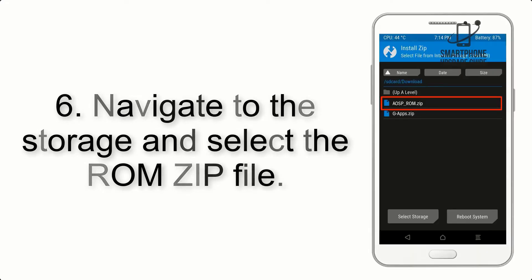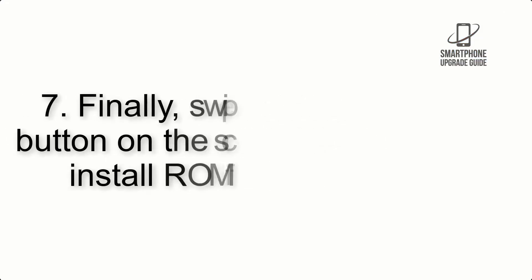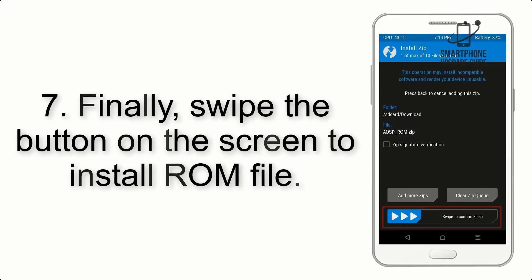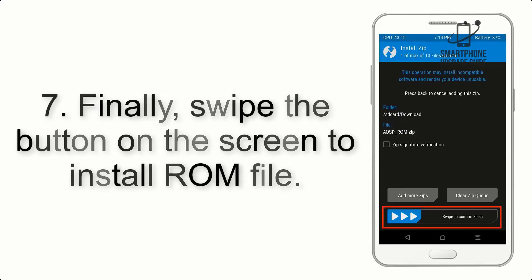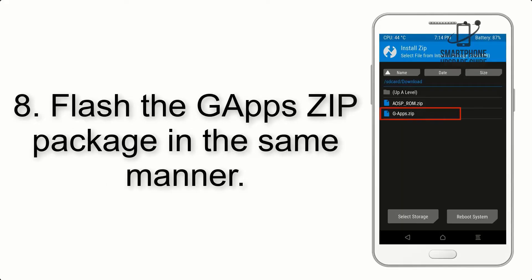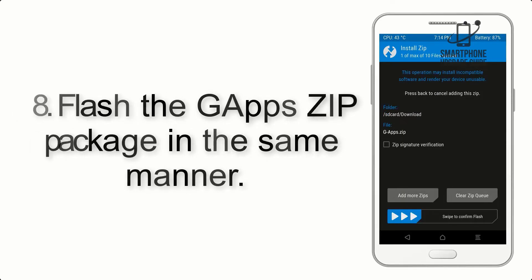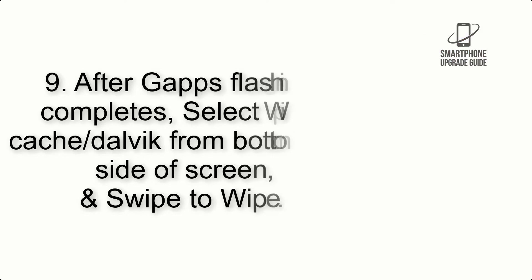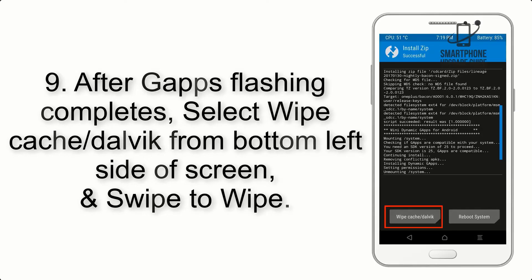Step 5: Go back to the recovery main screen and tap on the Install button. Step 6: Navigate to the storage and select the ROM zip file. Step 7: Finally, swipe the button on the screen to install the ROM file.